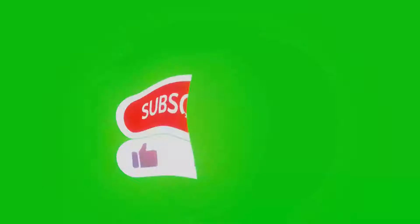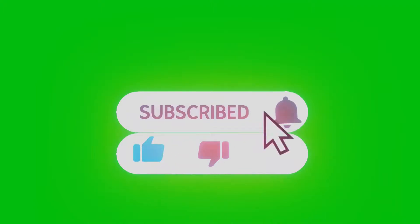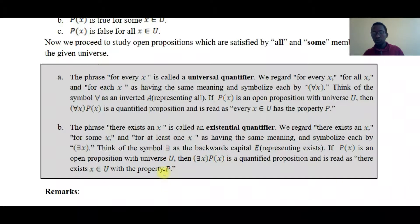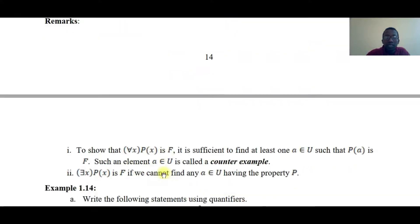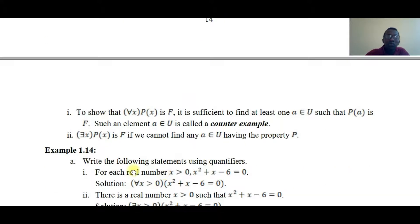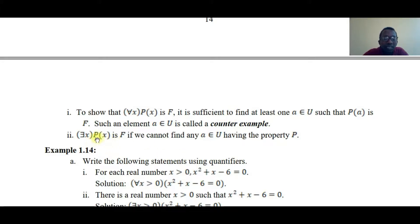'For all x, p(x)' is false if it is sufficient to find at least one x for which p(x) is false. And 'there exists x, p(x)' is false if we cannot find any x — any element of U — having the property p.